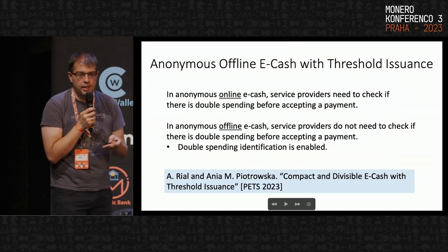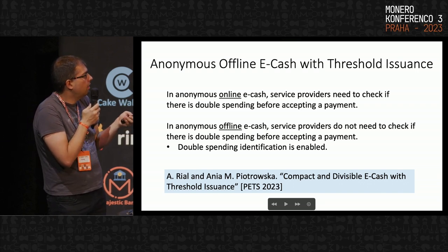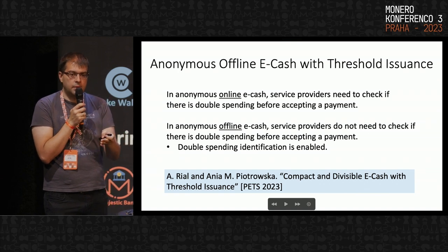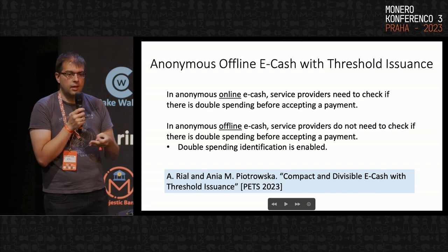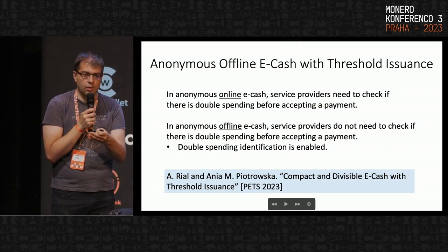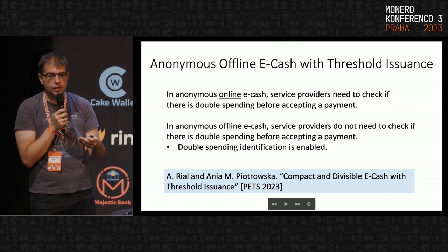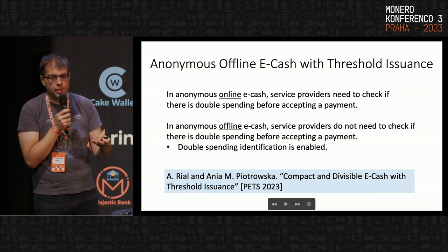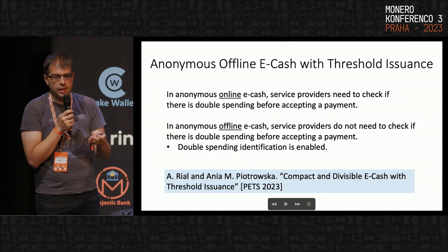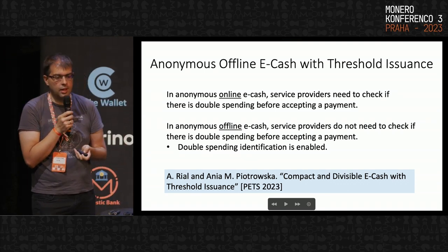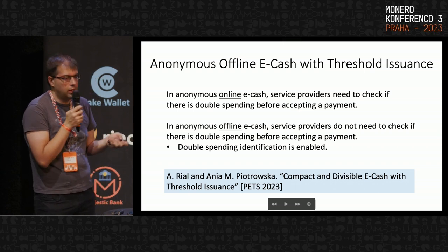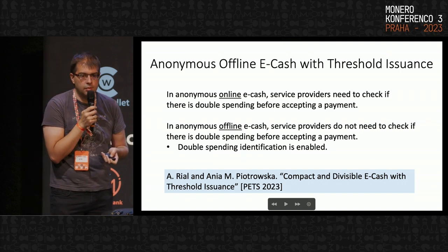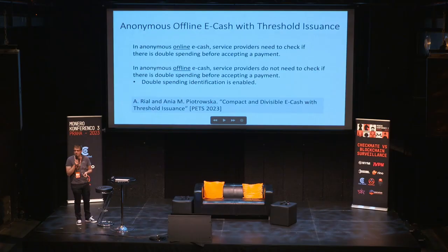So far I've discussed anonymous online eCash, where the service provider must contact the authorities online to check for double spending before accepting a payment. But there is also offline eCash, which allows the service provider to accept payment without contacting authorities. This is done by enabling double spending identification: there are double-spending tags in the payment, and only if a user double spends, the authorities can identify that user. We have worked on threshold anonymous offline eCash schemes, and next month I will present this work at PETS. There is already an ePrint of our paper. Thanks all for your attention.